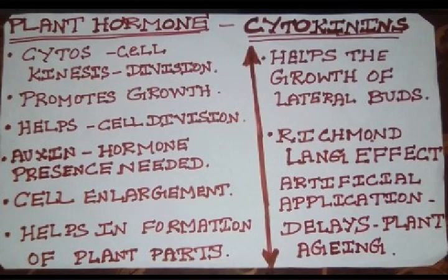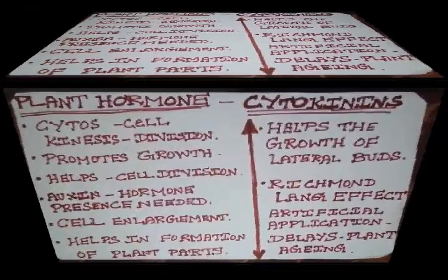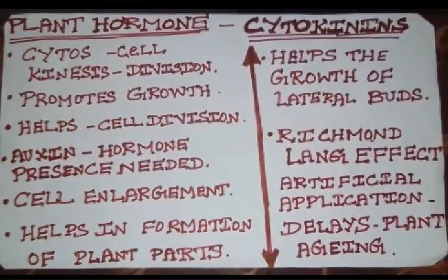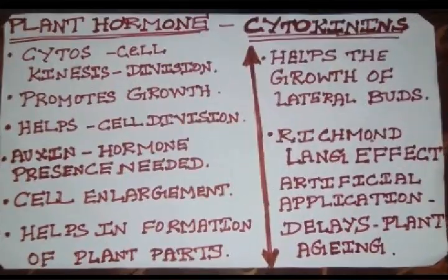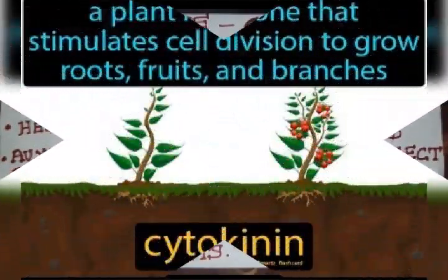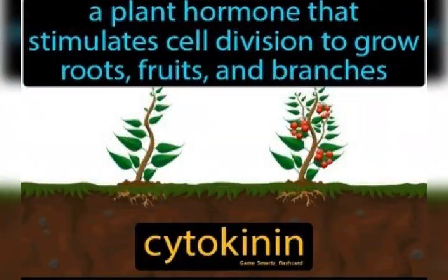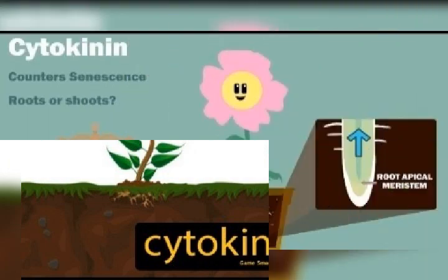This hormone cytokinin, in the presence of another plant hormone auxin, helps in the better growth of the plant. Auxin was the first plant hormone discovered.